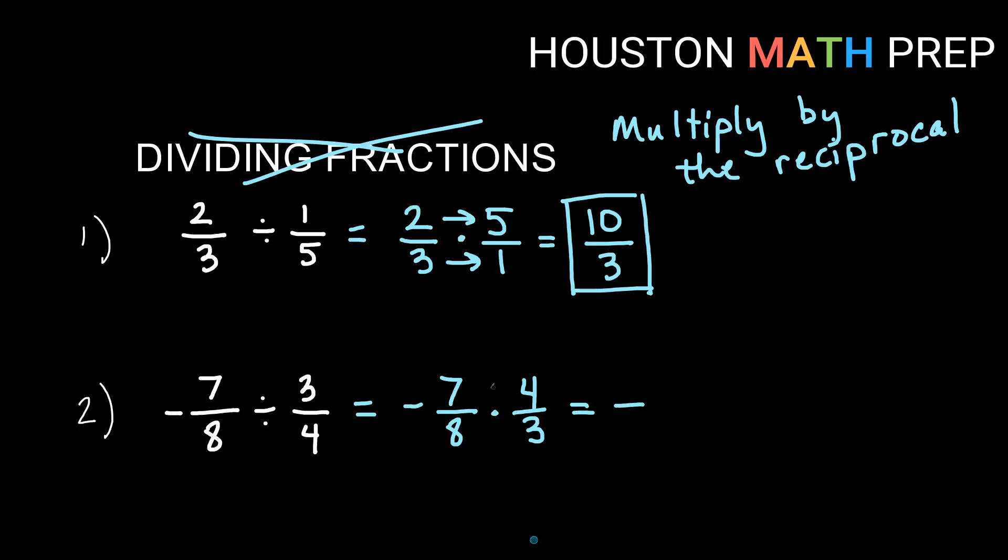I could go ahead and say seven times four is twenty-eight, and eight times three is twenty-four, but then I could reduce that. Both of these are divisible by four, so I would get negative seven if I divide by four on the top, and six on the bottom if I divide by four, so negative seven over six.